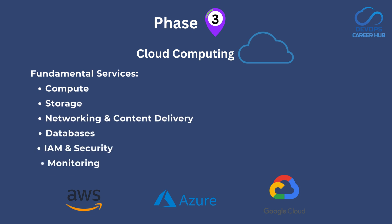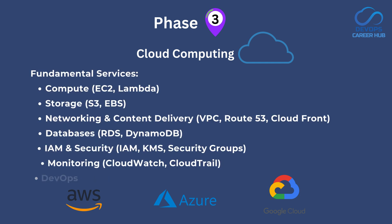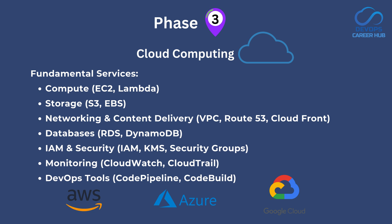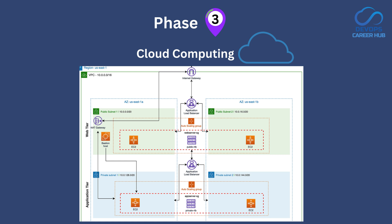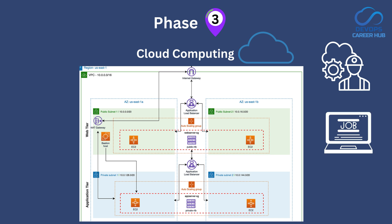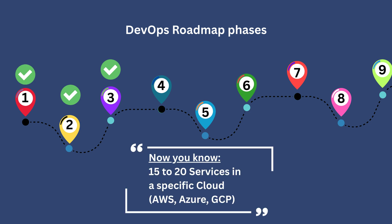AWS is the most popular one, but there are opportunities in Azure and GCP as well. Pick one and start learning the fundamental services like computing, networking and content delivery, storage services, databases, security identity and compliance, monitoring and management services, etc. I have listed the services under these categories to learn — aim for around 15 to 20 services. Once familiar with these services, try to set up a project where you integrate them with each other, for example a three-tier architecture. If your goal is to become a cloud engineer, you can start applying to cloud-related jobs at this step while learning additional services side by side.